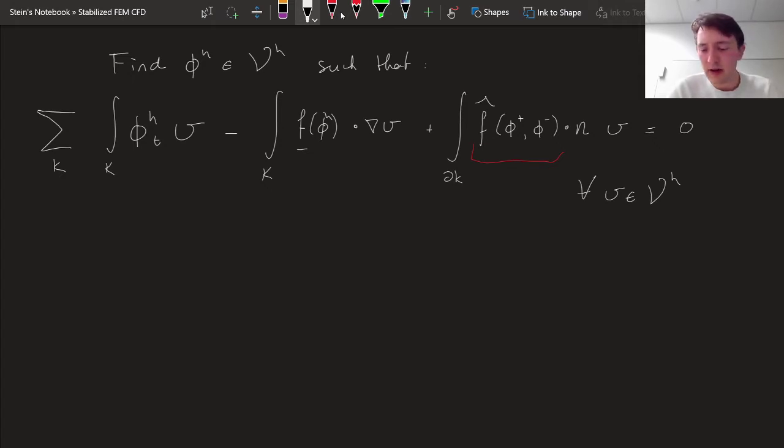Another problem that I see right here is that we have a phi plus and a phi minus. So do we have to predefine a choice of plus and minus on every boundary, or how do we go about dealing with that? And we can actually solve both of these issues simultaneously, simply by changing the way that we write these things. So I'm going to introduce two new domains, if you will.